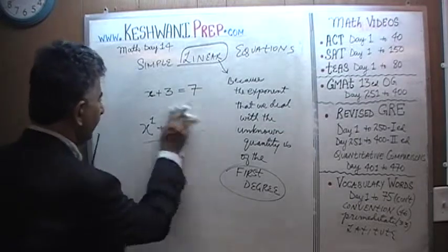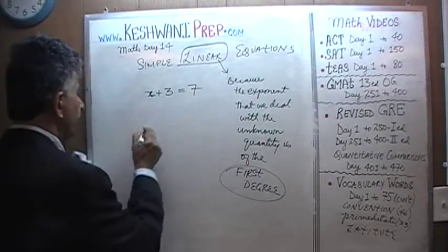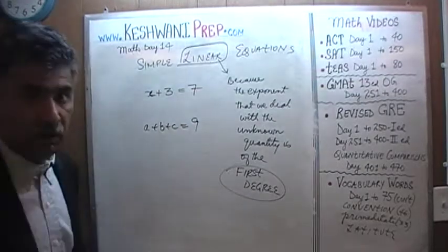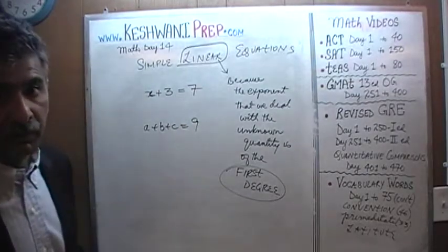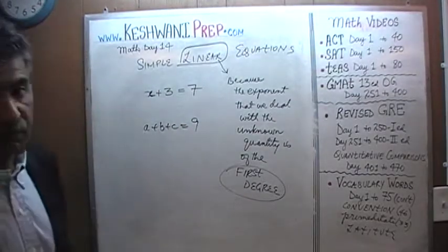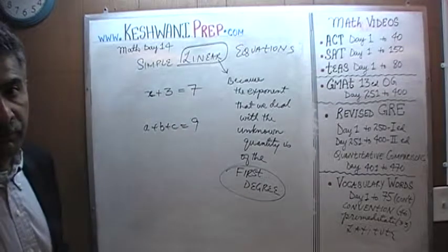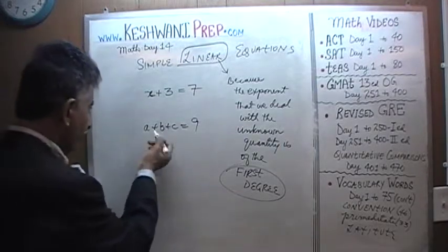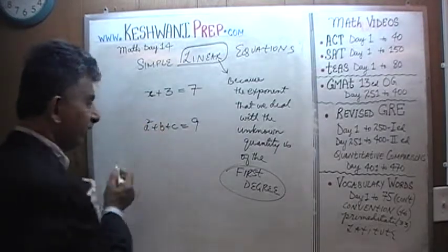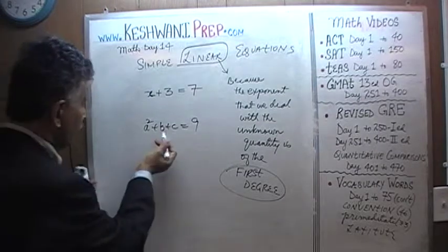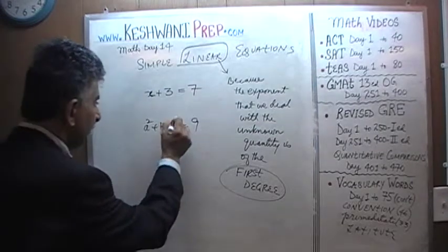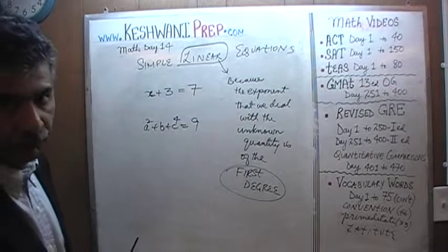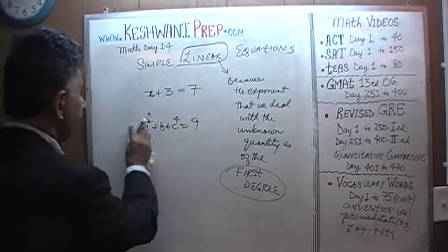For example, the equation a plus b plus c equals 9 is still of the first degree, because all the exponents are of the first degree. It is not third degree — it is first degree. Now an equation like a squared plus b plus c to the fourth is of the fourth degree. Do you understand? Anyway, let's continue.